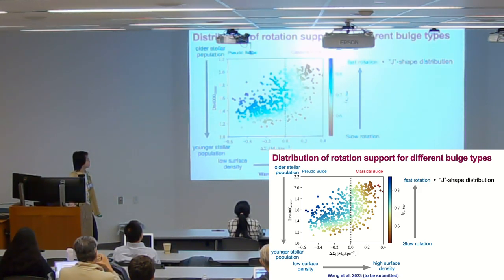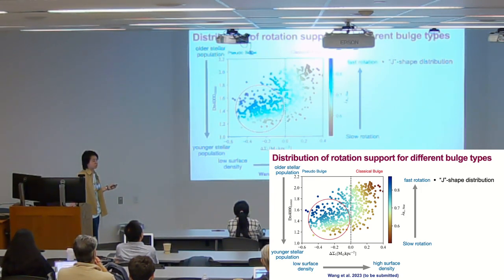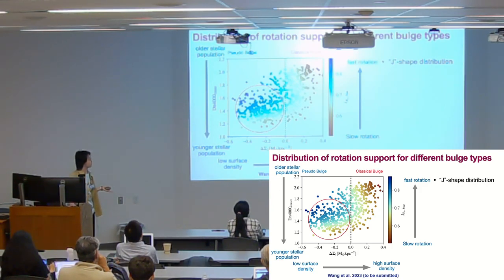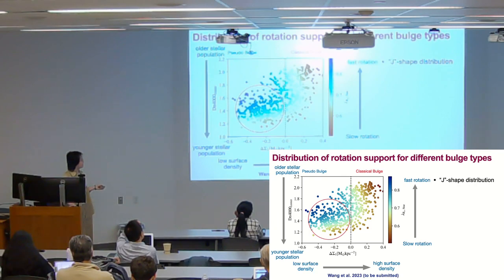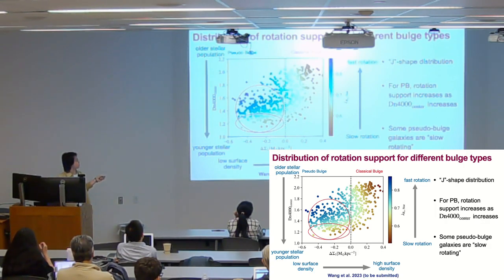But we also see something interesting. The most striking feature is the distribution on the left: for pseudobulge galaxies, there is a monotonic behavior between galaxy rotation support and central d4000. Lambda is measured within one effective radius, so the global rotation support indicator is not a false measurement. Why would we see a relation between central stellar population and global rotation support? Galaxies at the bottom — pseudobulges that are star-forming — have low lambda values similar to classical bulges. What drives this monotonic behavior, and why do some pseudobulge galaxies have such low rotation support?